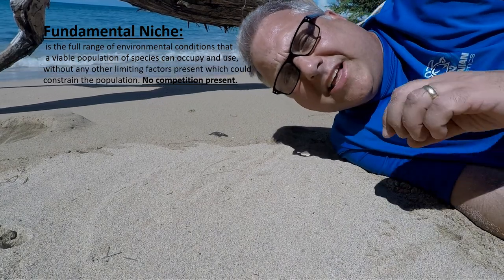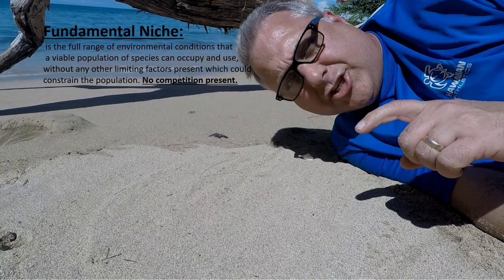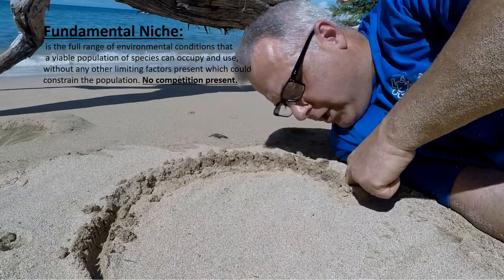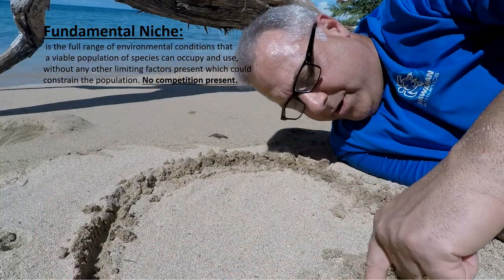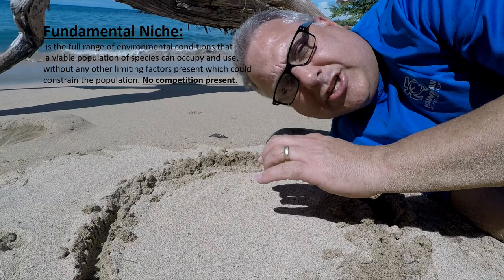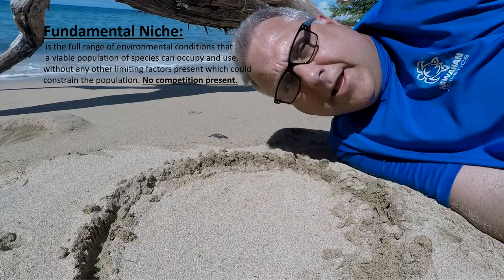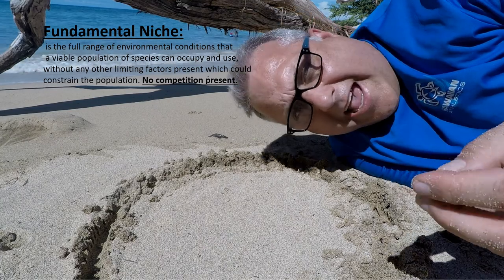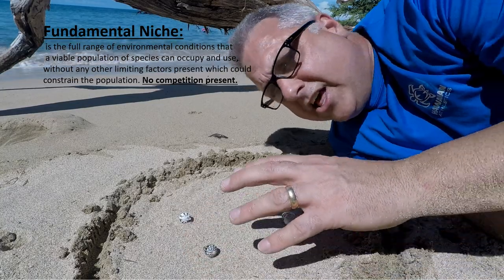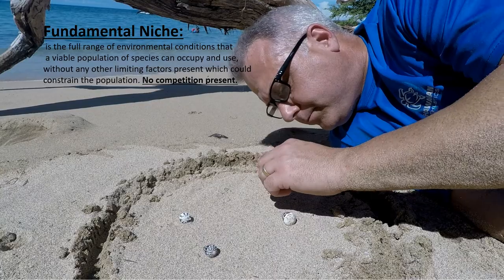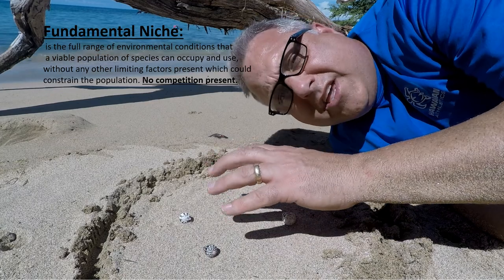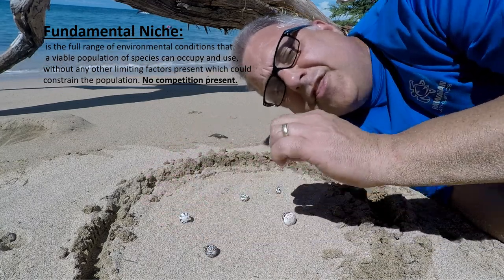Let's talk about something called the fundamental niche — it's an easy concept. Let's draw our circle again. This circle represents the location and all of the resources in that location for an organism to utilize. Let's add some cone shells. These cone shells are now in this location, utilizing the food that is there. They're happy, they're reproducing, and they're living in this fundamental niche.